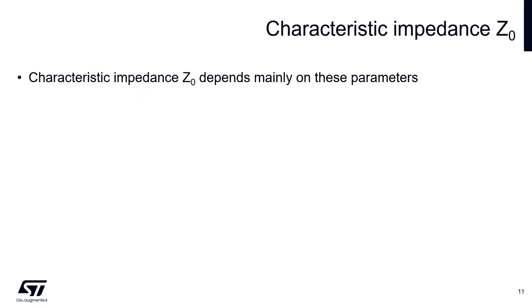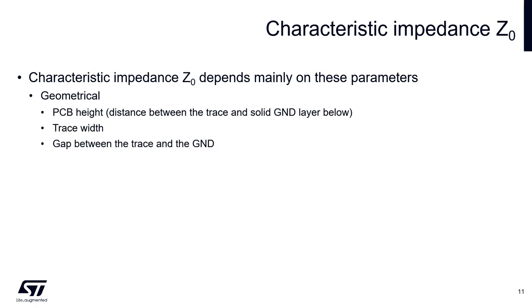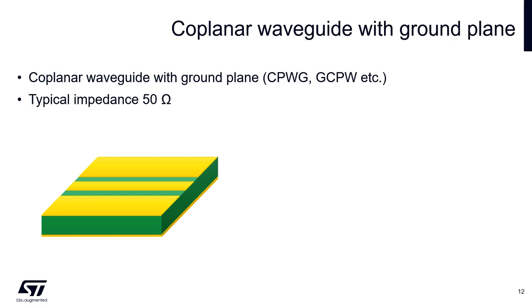As it was mentioned, the characteristic impedance depends on geometrical and material parameters of the PCB. Main geometrical parameters are PCB height, trace width, and gap between the trace and the ground. Material parameters are characterized mainly by dielectric constant epsilon r of the PCB material.